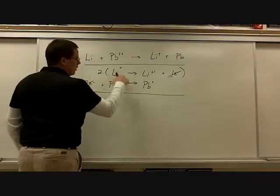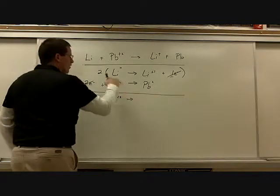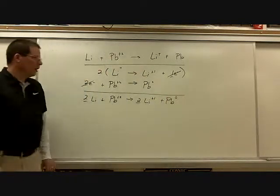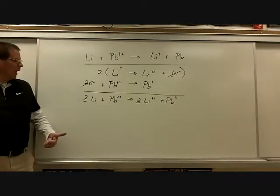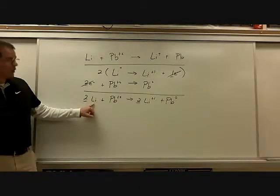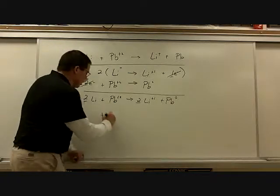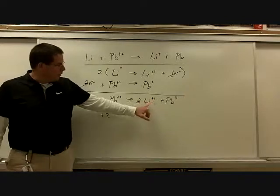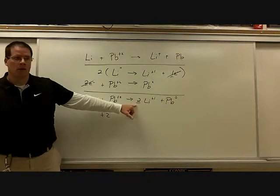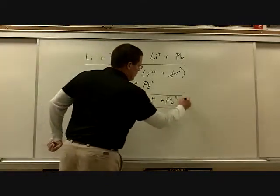When we finish, we have 2Li with no charge plus Pb²⁺ forming 2Li⁺ and Pb with no charge. Make sure we have the same number of atoms and same charges on both sides. On the left: lithium has no charge and lead has +2, so total charge is +2. On the right: two lithiums each at +1 gives total charge +2. Charges are balanced, atoms are balanced — this is our balanced redox equation.